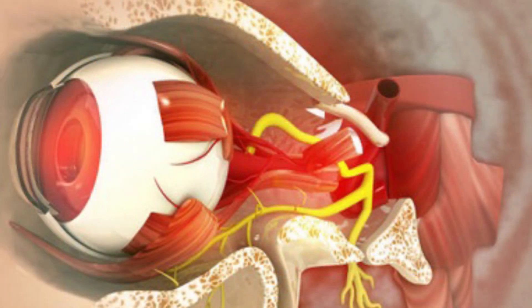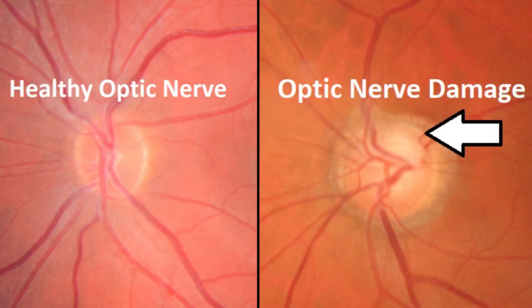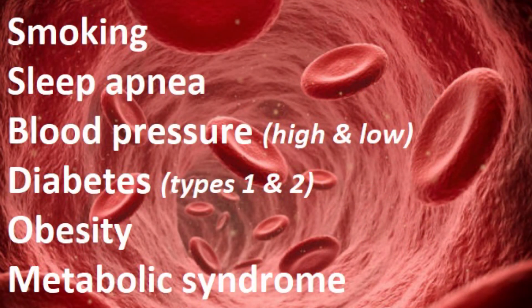In addition to high eye pressure, loss of oxygen and blood flow to the eye can also cause a portion of those little optic nerve cables to die off as well. We've already mentioned smoking, sleep apnea, blood pressure changes, and diabetes. Each of these conditions can compromise blood circulation to the eye and increase the risk of developing glaucoma, even in the absence of a higher eye pressure.